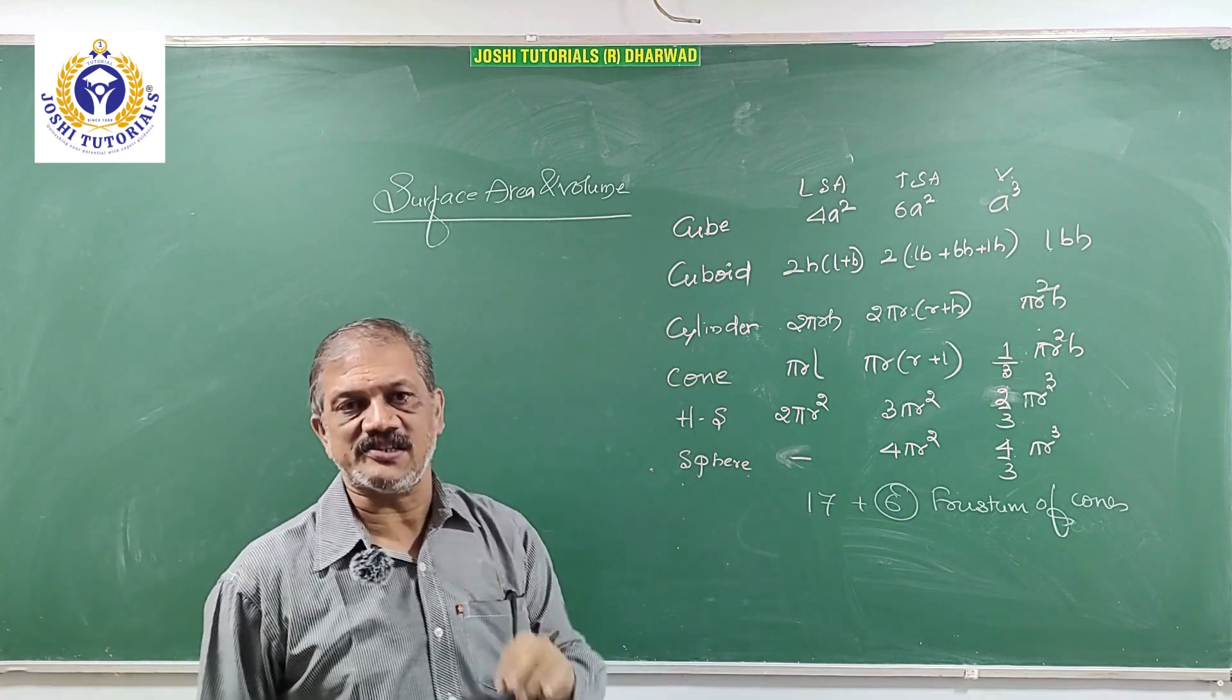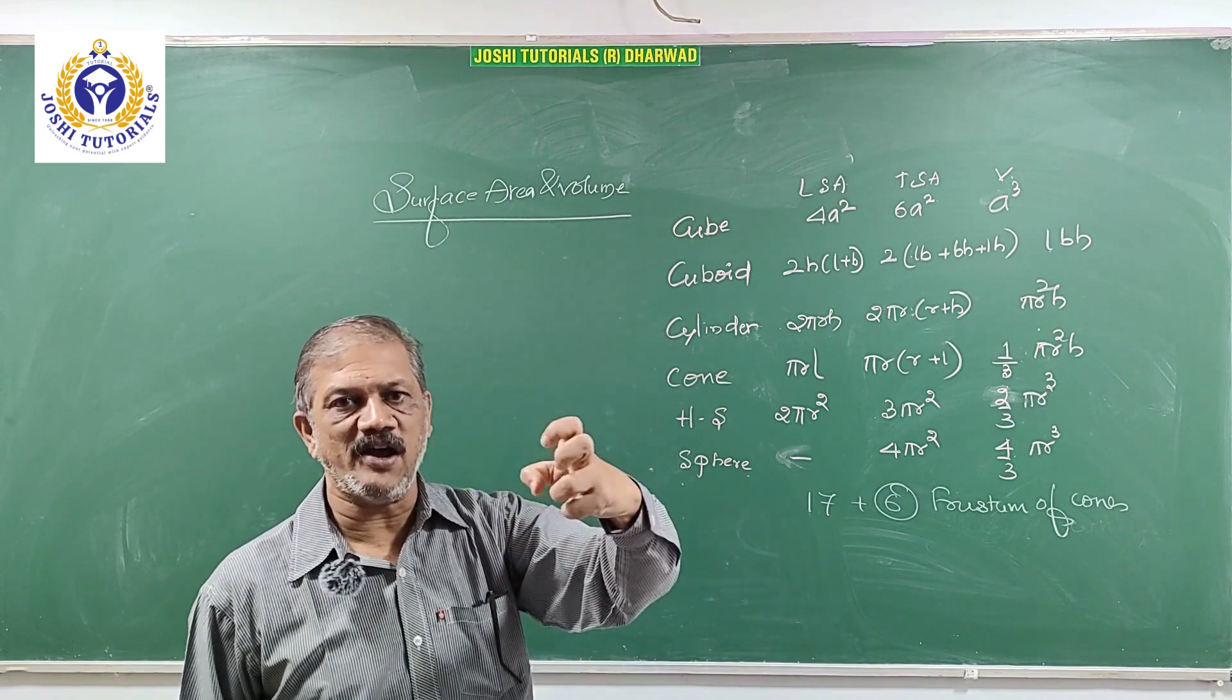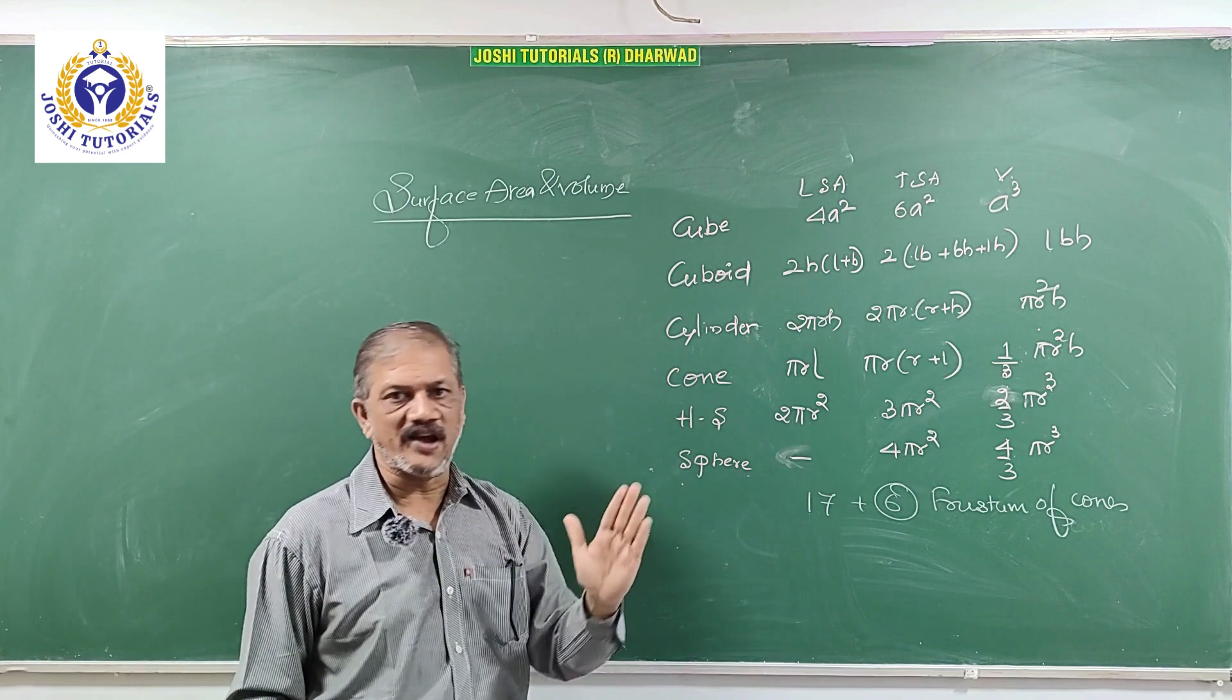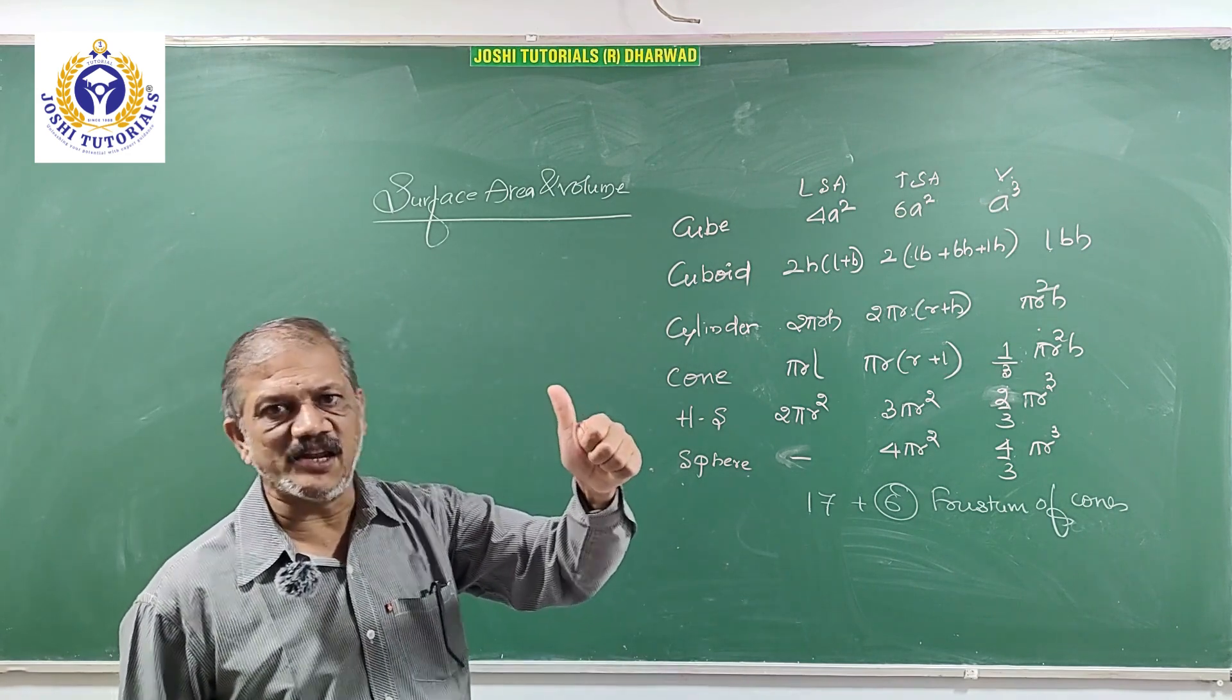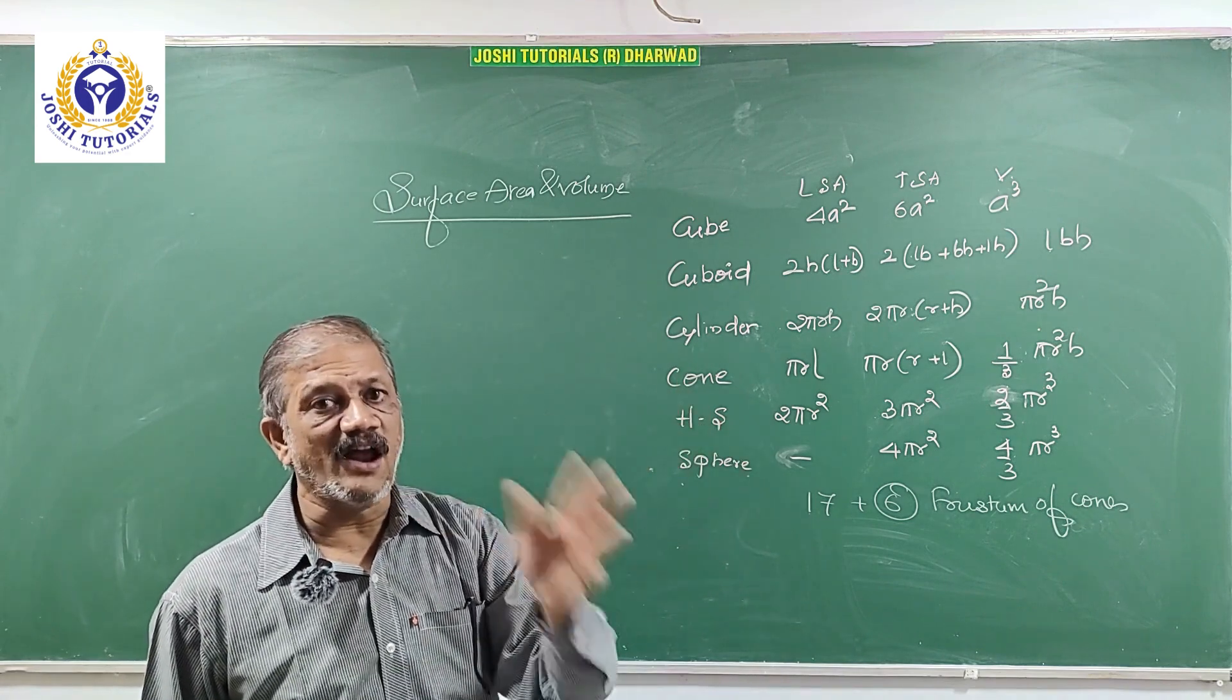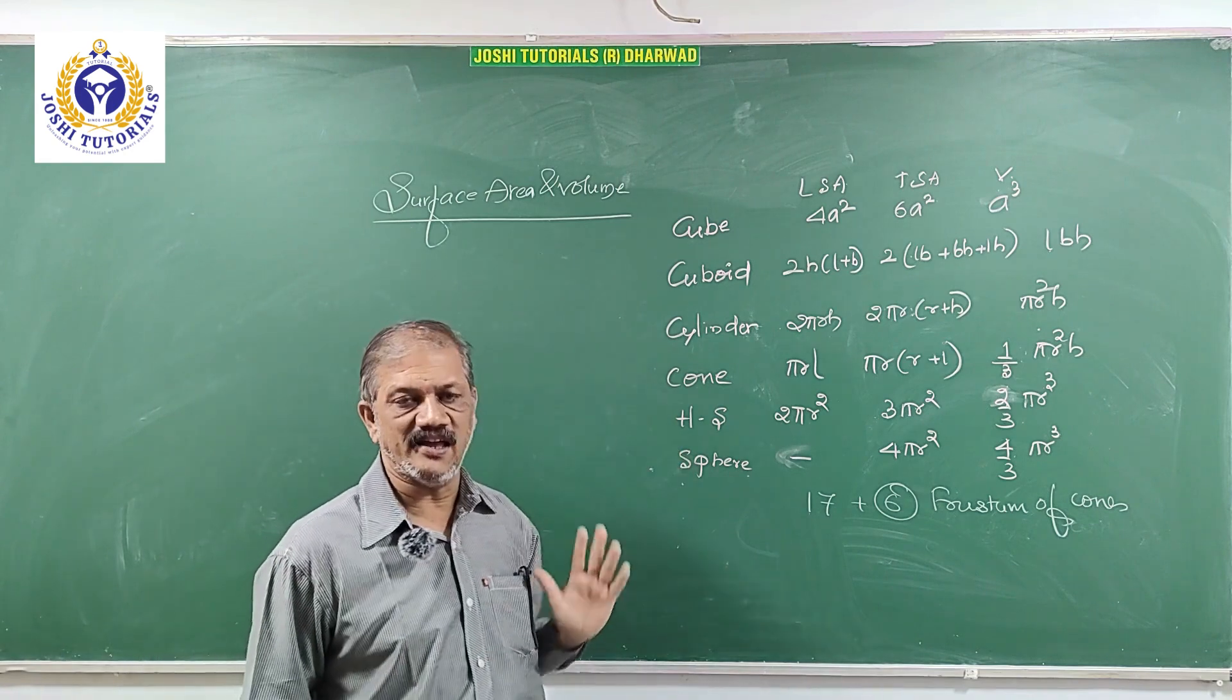In statistics, they don't ask usually out of syllabus. All types are there in the textbook and we have solved problems. You will find no difficulties. Mean, mode, median. Mean is guaranteed question, mode or median one question, and graph for state syllabus one question, more than, less than type.